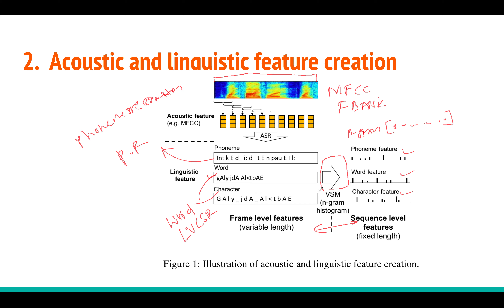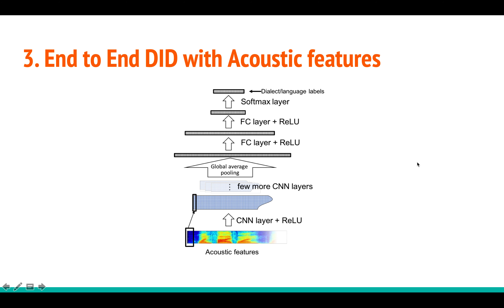The VSM model takes these phonemes, words, and characters and creates feature vectors for every utterance — so even for variable-length inputs you get a single vector. This is the whole idea of acoustic and linguistic feature creation. We have two models: the end-to-end acoustic model trained with MFCC, FBank, or spectrogram features, and the linguistic feature-based model.